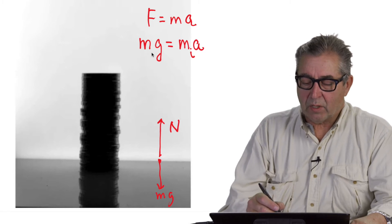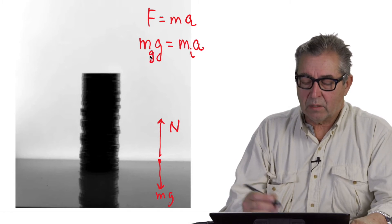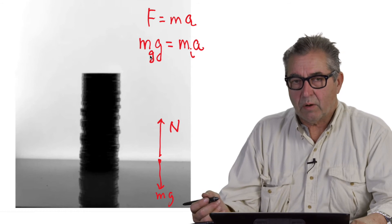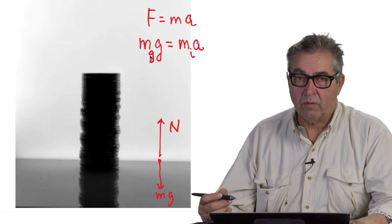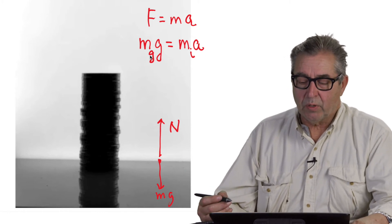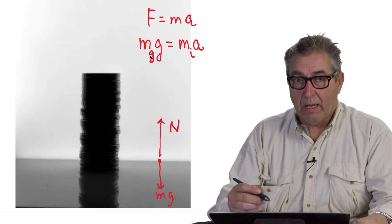And the mass on the left is normally called gravitational mass because it is how mass interacts with the gravitational field, g, to produce weight.